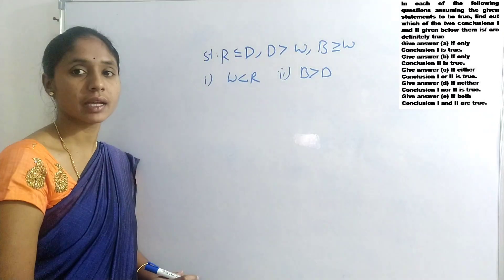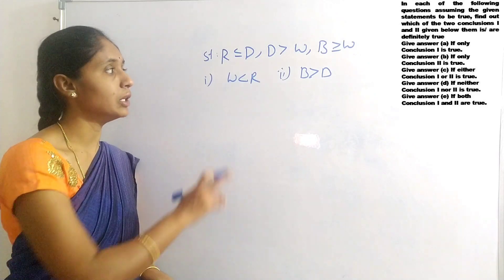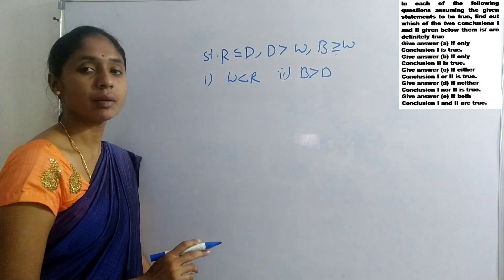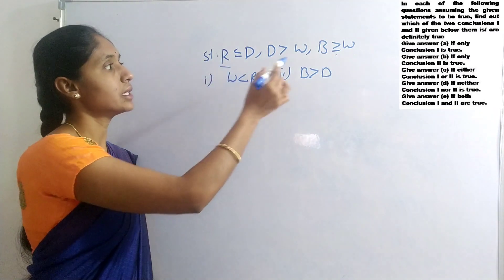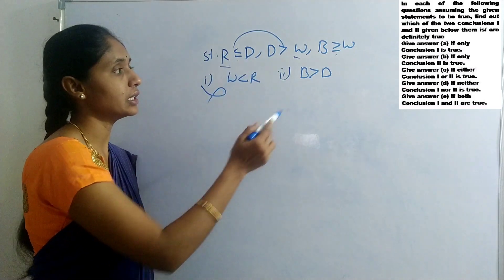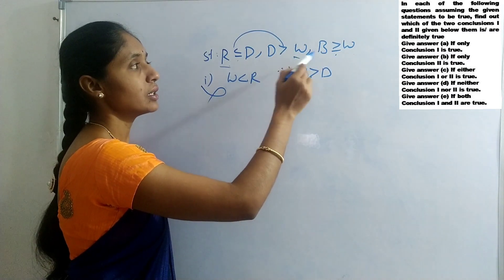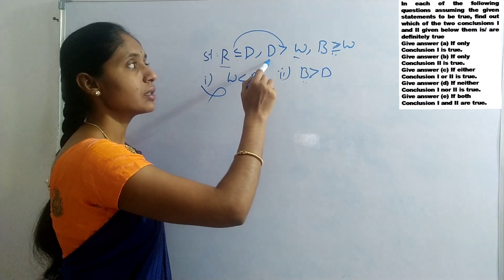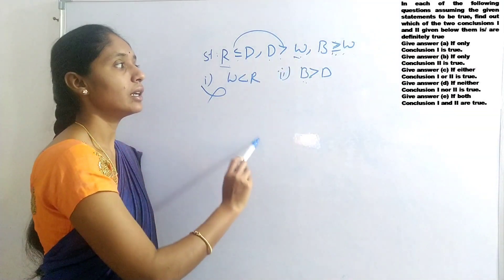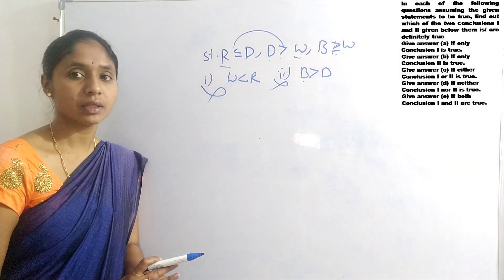Question 11: R less than R equals to D; D greater than W; B greater than R equals to W. Conclusions: W less than R; B greater than D. For W less than R: signs between R and W are less than and greater than — opposite, no relation. For B and D: D greater than W and W less than or equals to B — signs are greater than and less than — opposite, no relation. Neither conclusion 1 nor 2 is true.